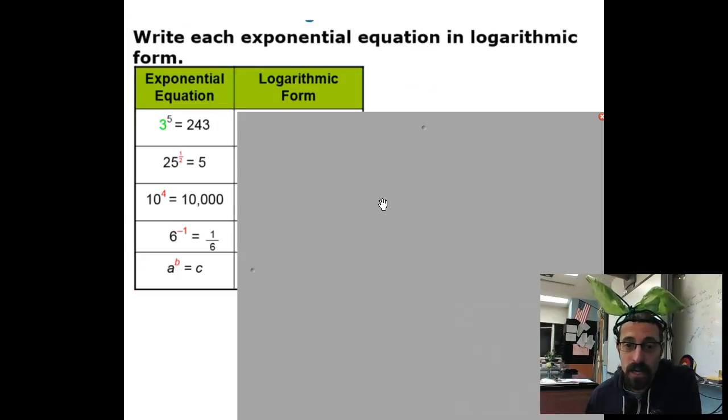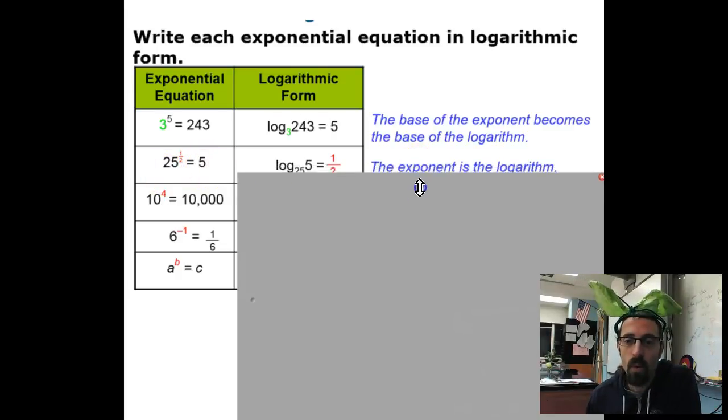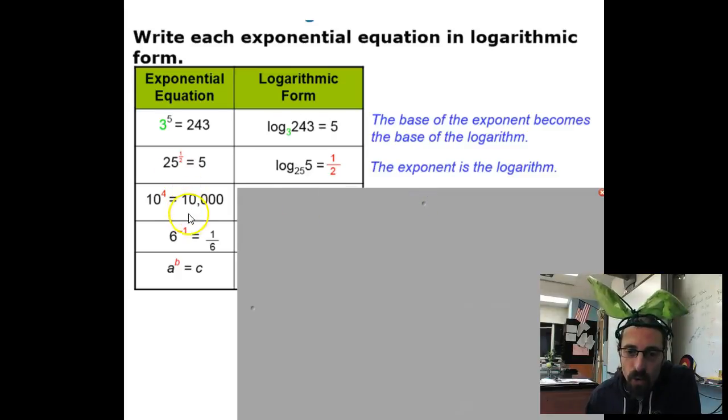What I want you to do here is write each exponential equation in logarithmic form. 3 to the 5th is 243. What's your base? Your base is 3. So you'd have log base 3 of 243 equals 5. What is the power? 3 to what power gets you 243? This one says the base is 25, the power is 1 half. So the log base 25, what's the result? The result is 5, should equal the power 1 half. Try these next 1, 2, 3 problems before I show you the answers. See if you can figure it out.